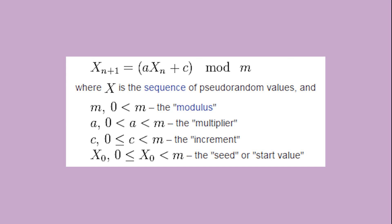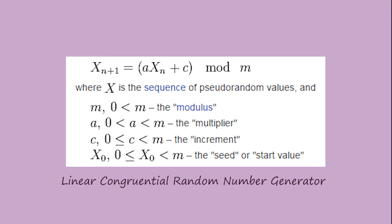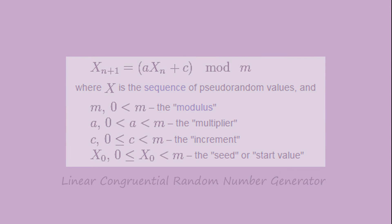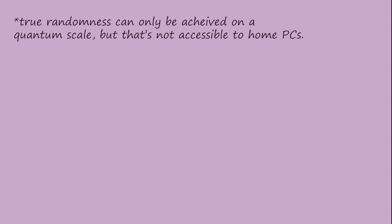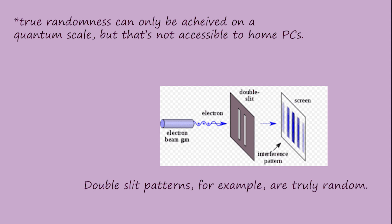But then we figured out how to generate better pseudo-random numbers by just using really complicated maths. This is the linear congruential random number generator, and it's used a lot today. That being said, the LCRNG isn't truly random — it's still pseudo-random, but just a lot closer to true randomness.